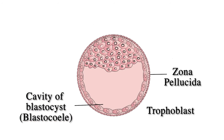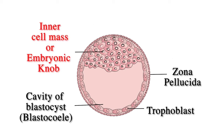We can see an outer layer of blastomere cells called trophoblast. We also observe a cellular mass adhered to the trophoblast on one end of the blastocyst. This cellular mass is called inner cell mass. The inner cell mass at one pole looks like a knob that gives rise to the embryo, and is called the embryonic knob.